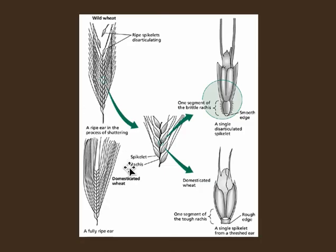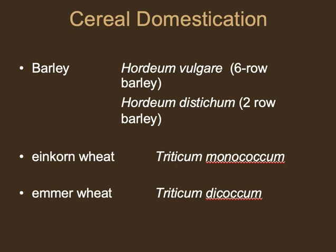Not only did people select for large two-row barley, but they actually produced a variety called six-row barley — six rows of seeds on one plant, producing a lot more food. For cereal grains we have barley and two varieties of wheat: einkorn wheat and emmer wheat. Barley tends to be more heat resistant and salt resistant, so a higher ratio of barley to wheat at a site might indicate the area was getting hotter or the soil was gaining more salt. Barley is a much hardier crop than wheat.